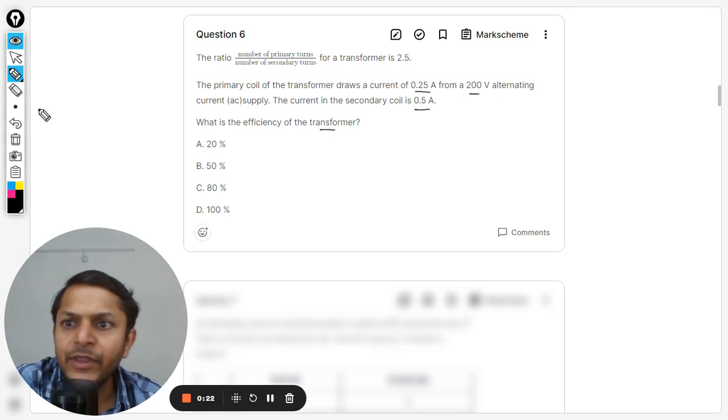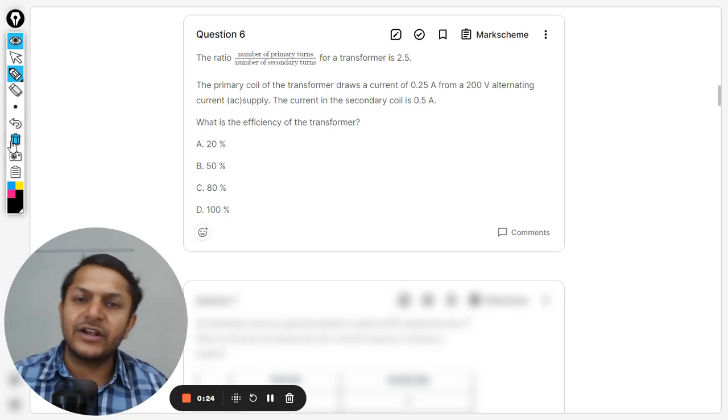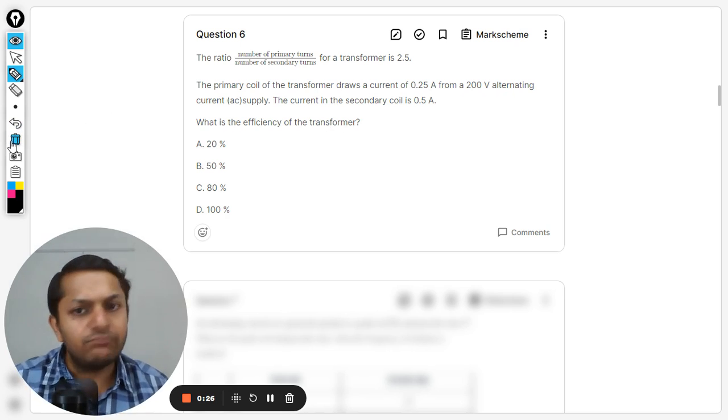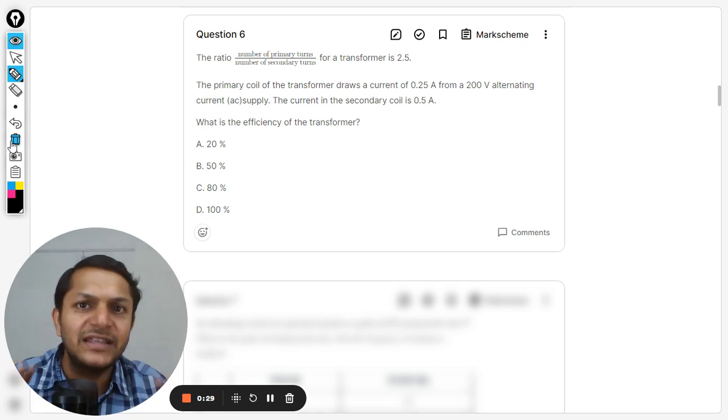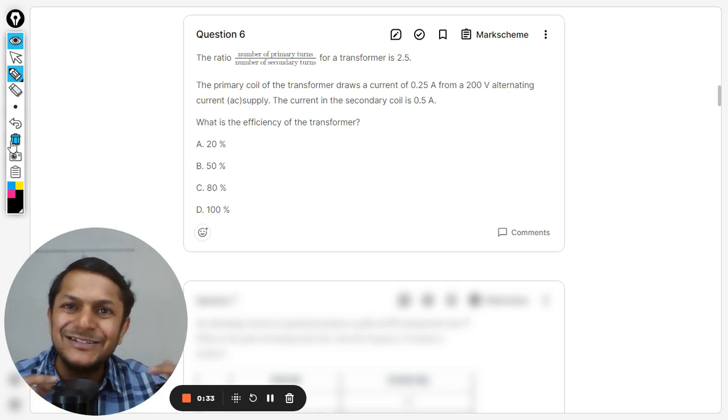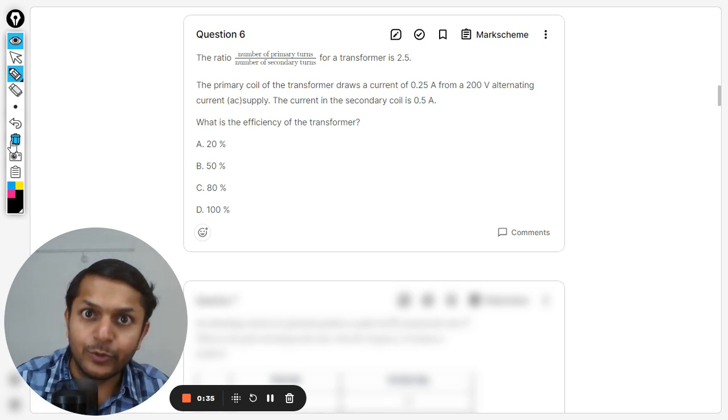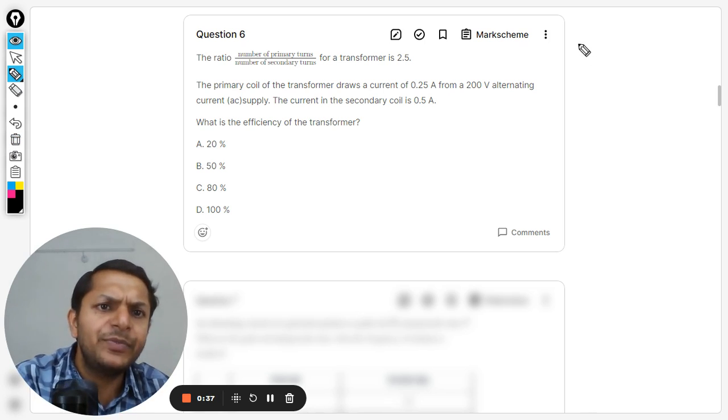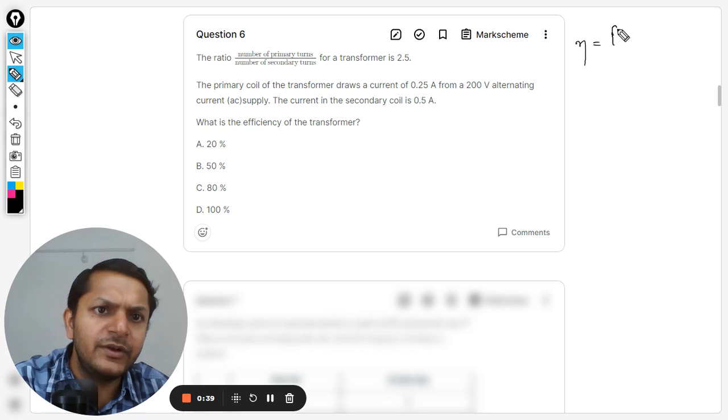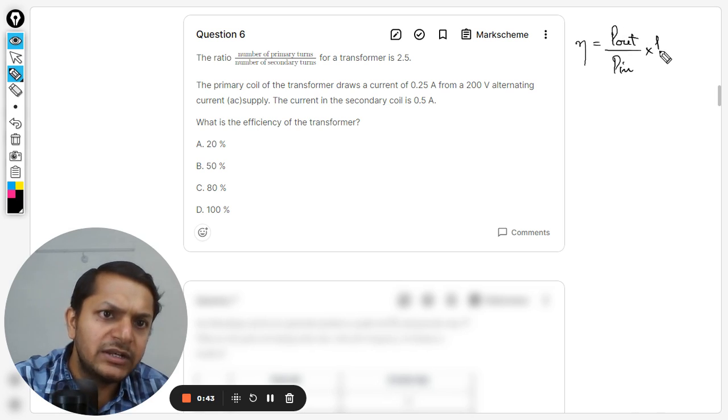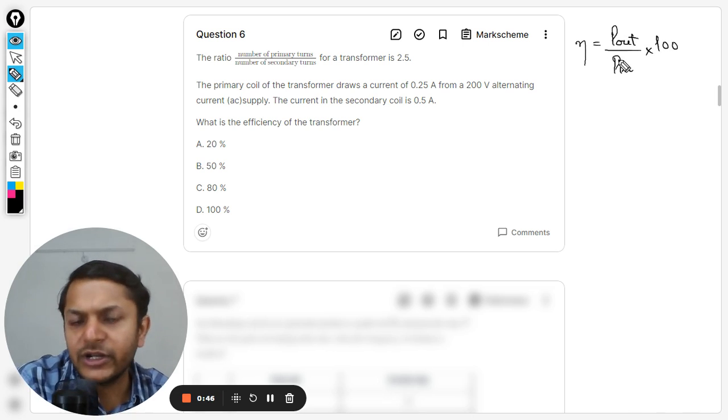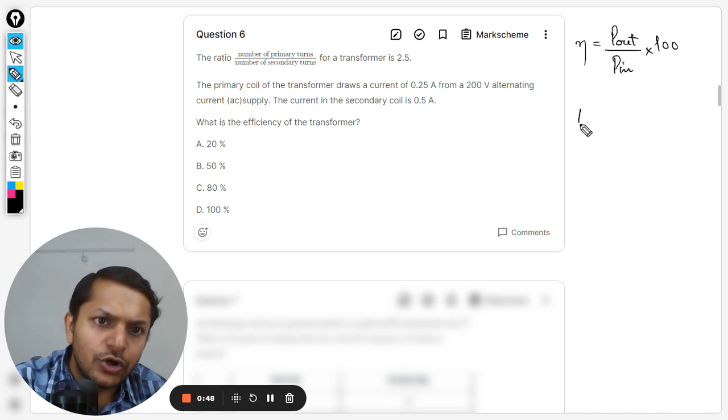What is the efficiency of the transformer? So we want to find the efficiency of a transformer, and obviously they are saying that the efficiency is not 100%, so the power input is not equal to the power output. Clearly, the efficiency of a transformer will be given by the power output divided by power input, multiplied by 100.